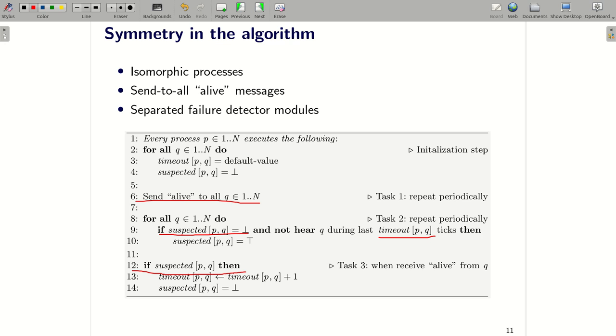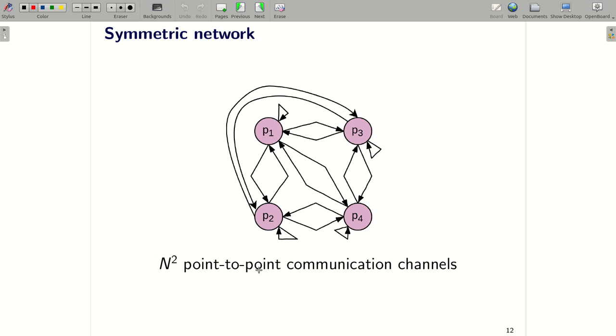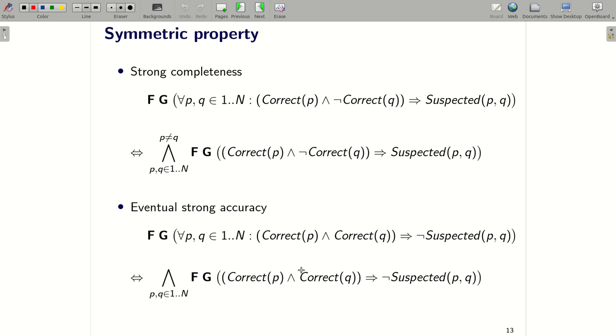So that's why we can consider there are n separated failure detector modules in every process. And now, you can see that the network is also symmetric. For example, here you can see that this is the network with four processes. This is a complete graph. In general, there are n square point-to-point communication channels in the system. In the checking properties, they are also symmetric. So you can see that all properties, strong completeness and eventual strong accuracy, they are symmetric.